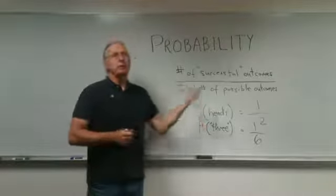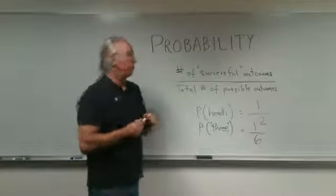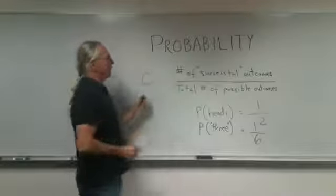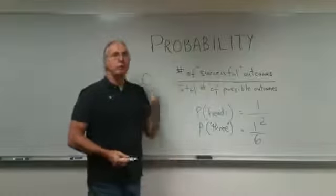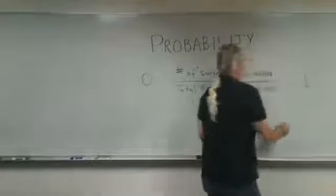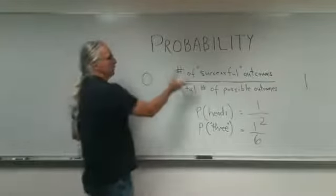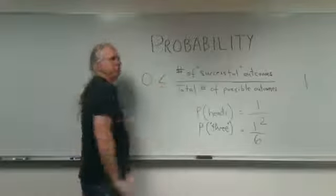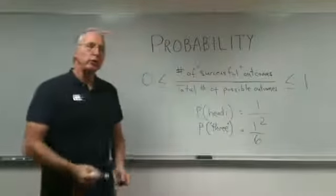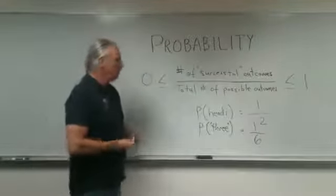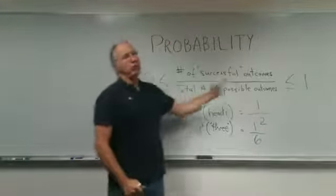Now, the least number that that fraction can equal is zero, and the greatest number that fraction could be is one. So probability could be greater than or equal to zero, and at the same time, less than or equal to one. Notice that both one-half and one-sixth are between zero and one.